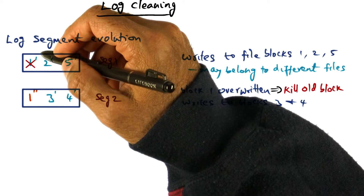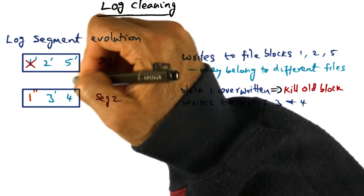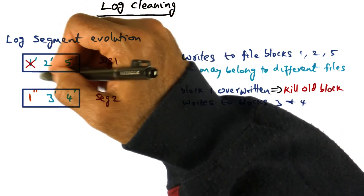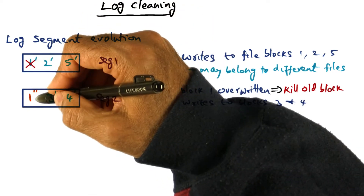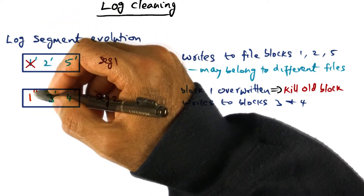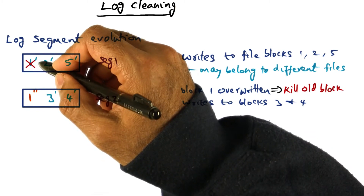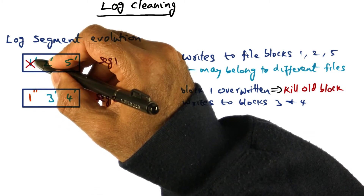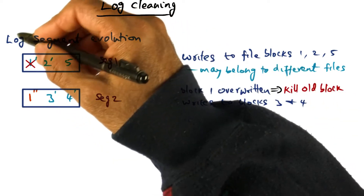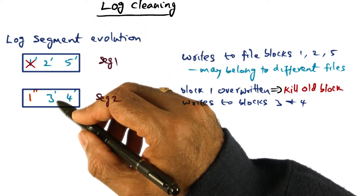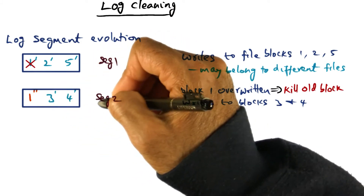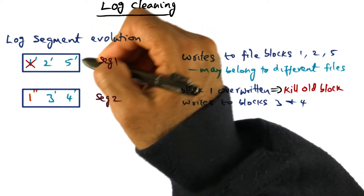As client activities progress, we are going to create holes in the segments. Remember that these segments are persistent data structures on disk. Once block one was overwritten on the client node, the newer segment contains the latest copy of that file block, so we nuke the old copy and create a hole in the original log segment. Subsequently, the client writes to other file blocks three and four, so log segment two contains one double prime, three prime, and four prime, while segment one contains two prime and five prime.